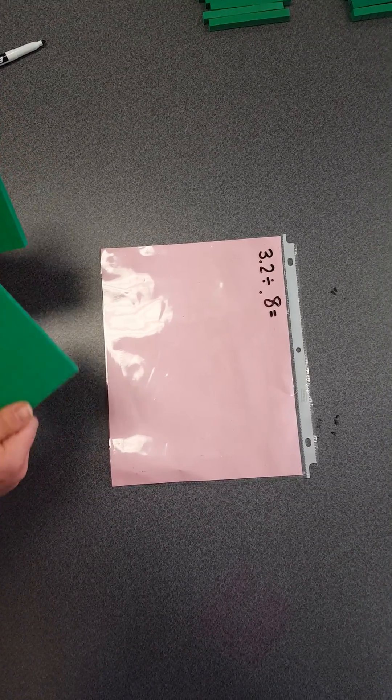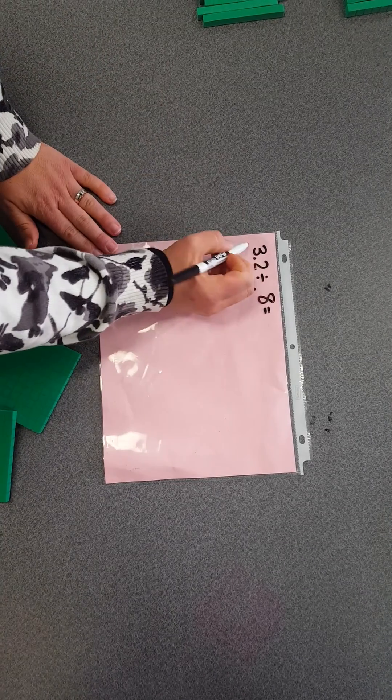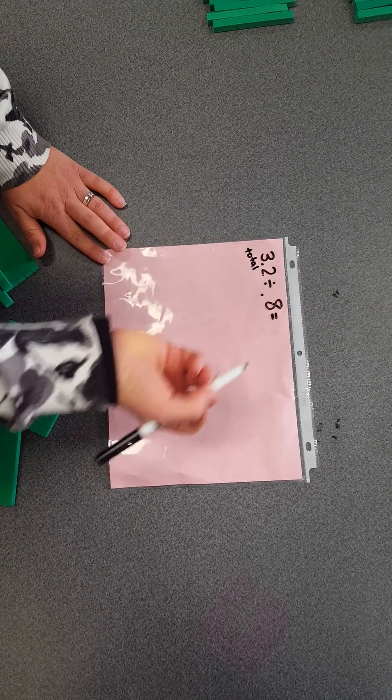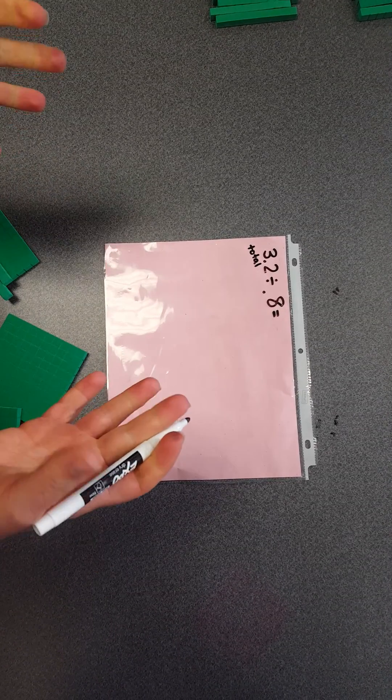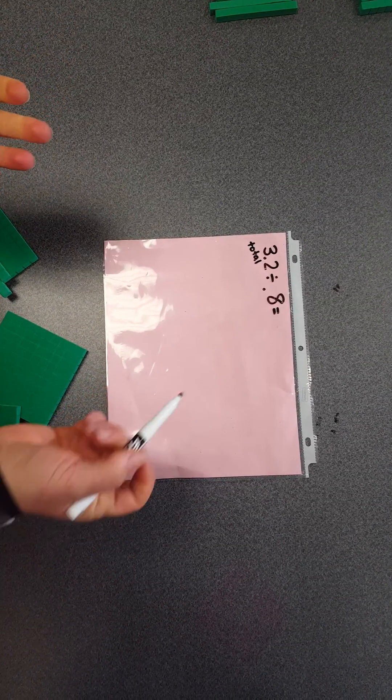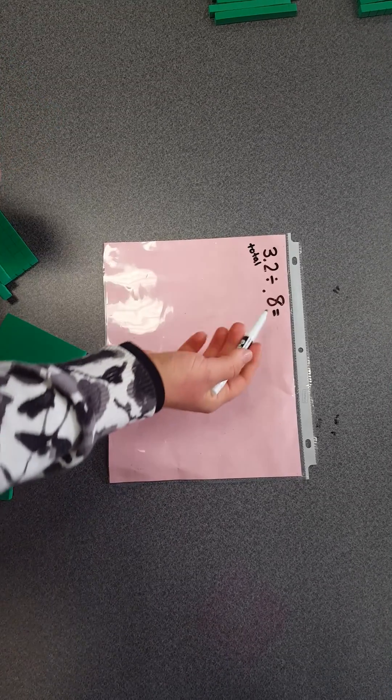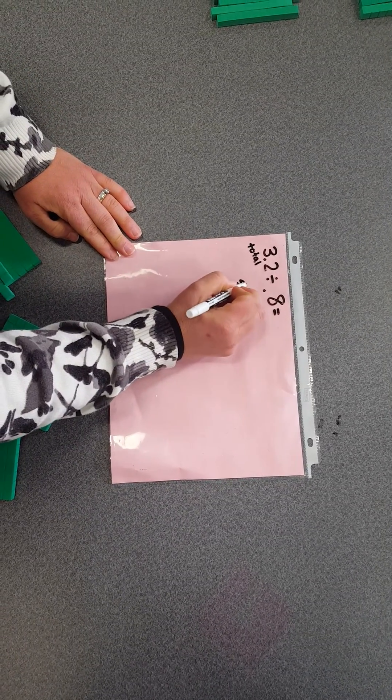Your students first need to understand that 3.2 is your total, and we're dividing it by 0.8. I don't know how to make 0.8 of a group, so in this problem I'm going to understand 0.8 as the size of the group.